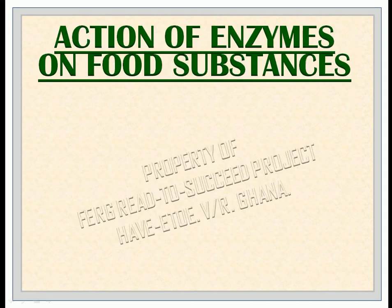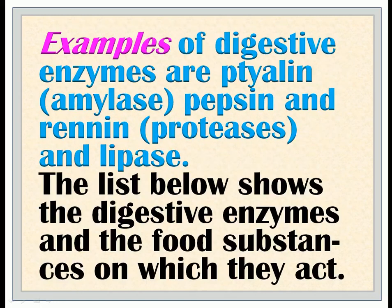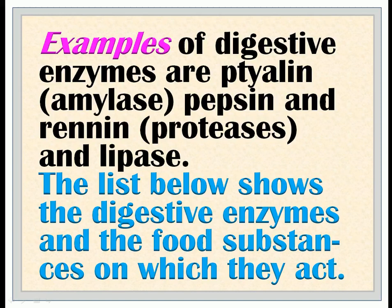Action of enzymes on food substances: Digestive enzymes act on different food substances to break them down into smaller molecules for easy absorption into the blood. Examples of digestive enzymes are ptylin (amylase), pepsin, renin, proteases, and lipase. The list below shows the digestive enzymes and the food substances on which they act.